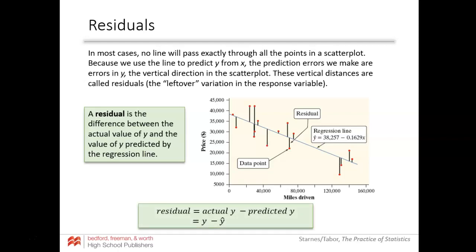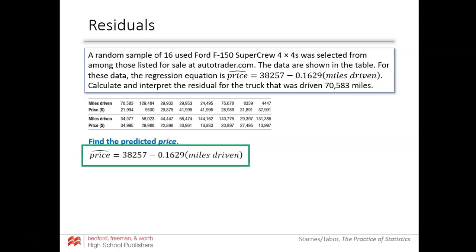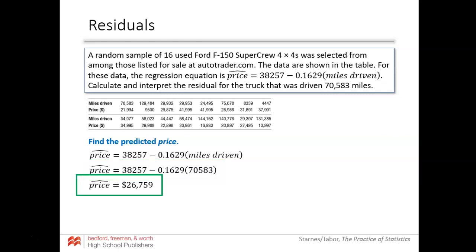The notation in stats is y minus y-hat, where y-hat is the predicted y value from the line. Using the same Ford F-150 data, we calculate and interpret the residual for the truck driven 70,583 miles. We first find the predicted price using our regression equation. Substituting in that number of miles, we get a predicted price of $26,759.